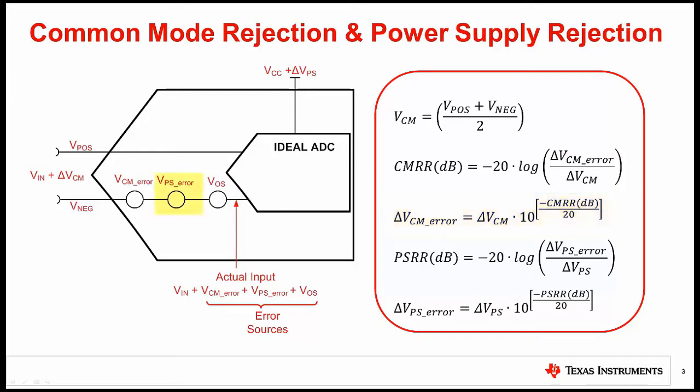Power supply rejection, or PSRR, also generates an error source in series with the ADC input. Power supply rejection error is a function of the change in the power supply voltage. Variations or noise on the power supply will reflect back to the input as an error source. The equation for power supply rejection is the same form as the common mode rejection, but in this case it is based on power supply variations.